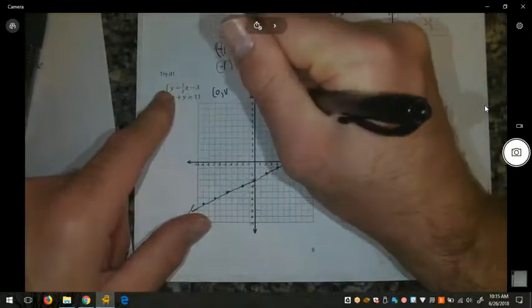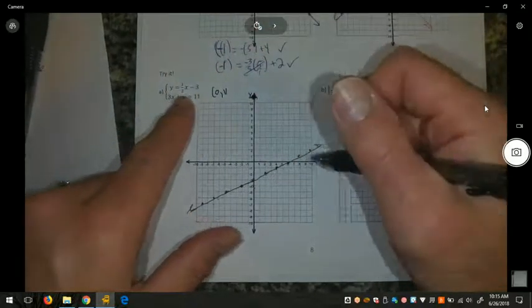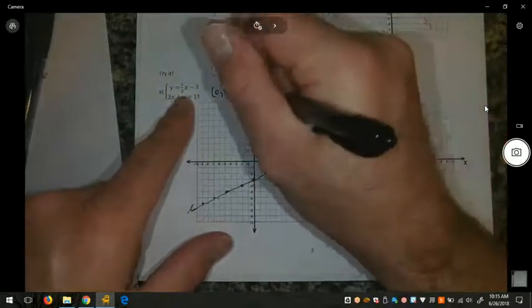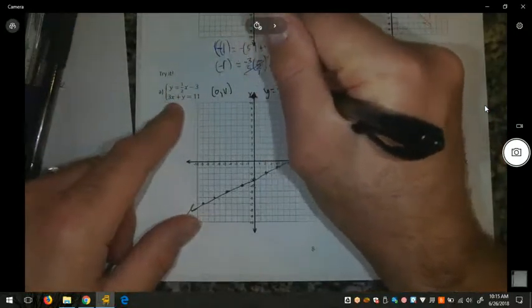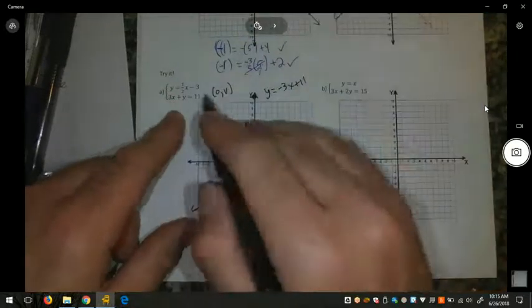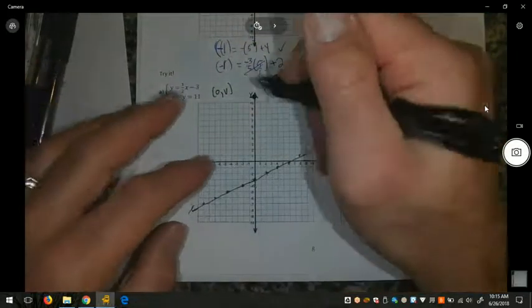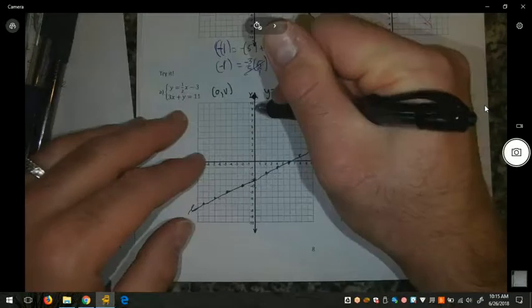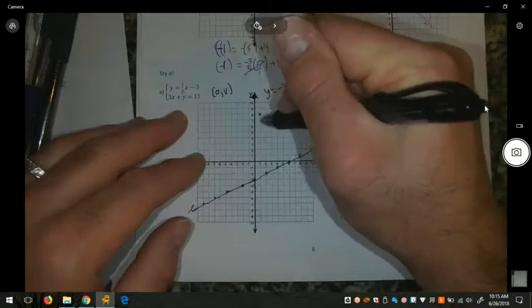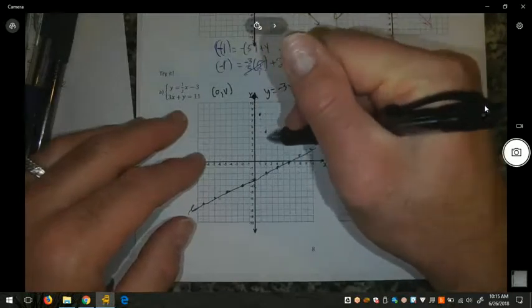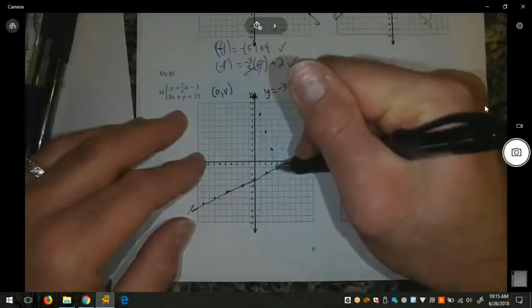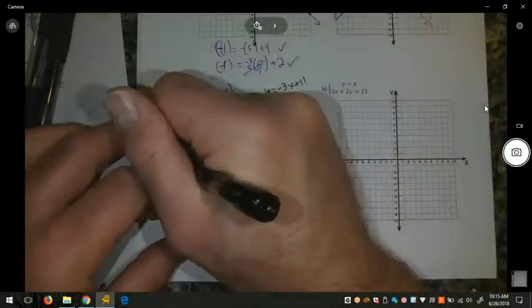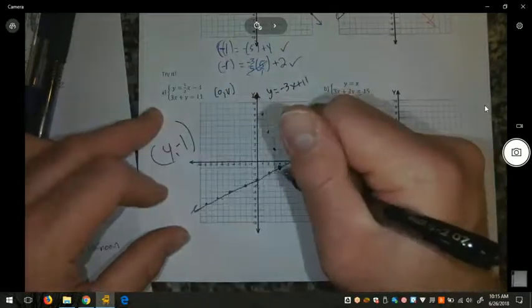The y-intercept, 0 comma 11. The x-intercept is a decimal value, so I'm actually going to change this to slope intercept form. Y equals negative 3x plus 11 by subtracting the 3x to both sides. So that means from this 11, I go down 1, 2, 3, and over 1. 1, 2, 3, over 1. 1, 2, 3, over 1. 1, 2, 3, over 1. There's our solution at 4, negative 1. But I'm going to go a little past that. 1, 2, 3, over 1. 1, 2, 3, over 1. And connect my points.